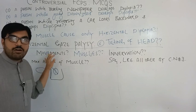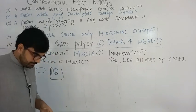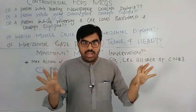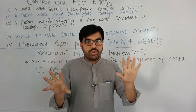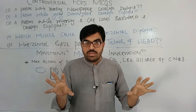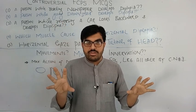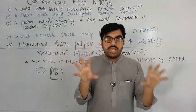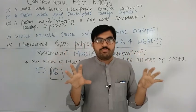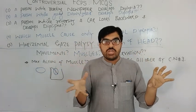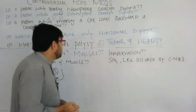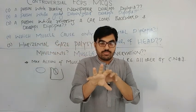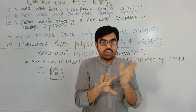What types of movements are possible in the eye? We have abduction, adduction, elevation, depression, intorsion, and extorsion — these are the basic movements which occur in the eyeball. If we know which muscles and which nerves perform these, we will be able to solve these MCQs. There are six muscles: superior rectus, inferior rectus, medial rectus, lateral rectus, superior oblique, and inferior oblique.